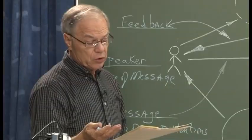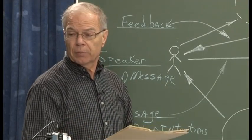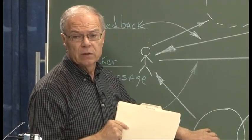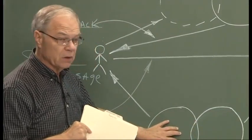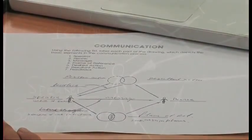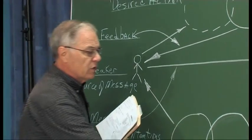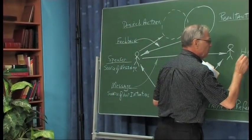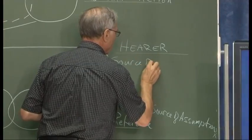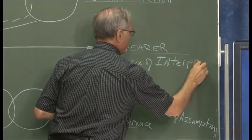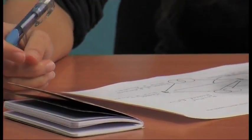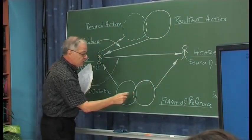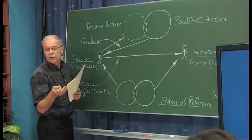Most of the time, our assumptions are not articulated — they're not spoken. For example, the monkey in the monkey-and-fish story was assuming that the fish needed help. That was an assumption he was making from his frame of reference. Being a monkey, he liked dry land and didn't like water, so he assumed the fish was like himself. Based on that assumption, the problem came up. In the hearer, we have the source of interpretation. This frame of reference shapes how the message is sent, but the hearer's frame of reference shapes how the message is heard. Unless both share a frame of reference, there's a good chance of miscommunication.